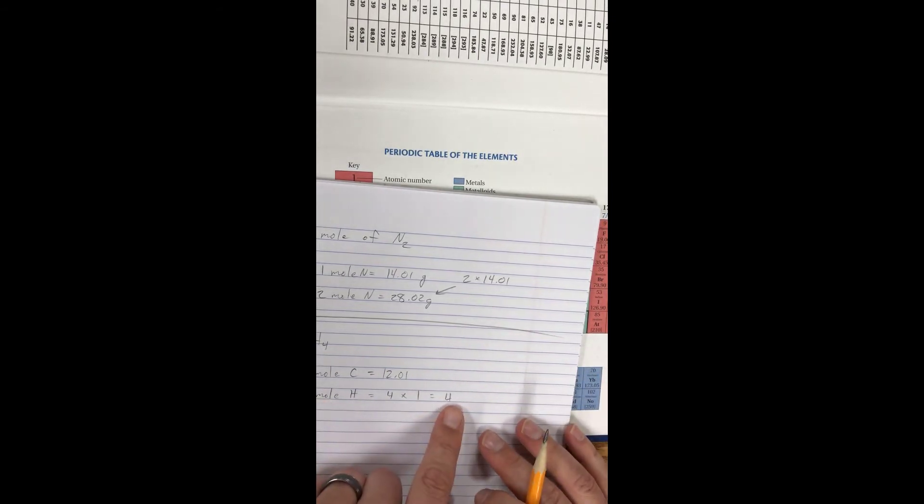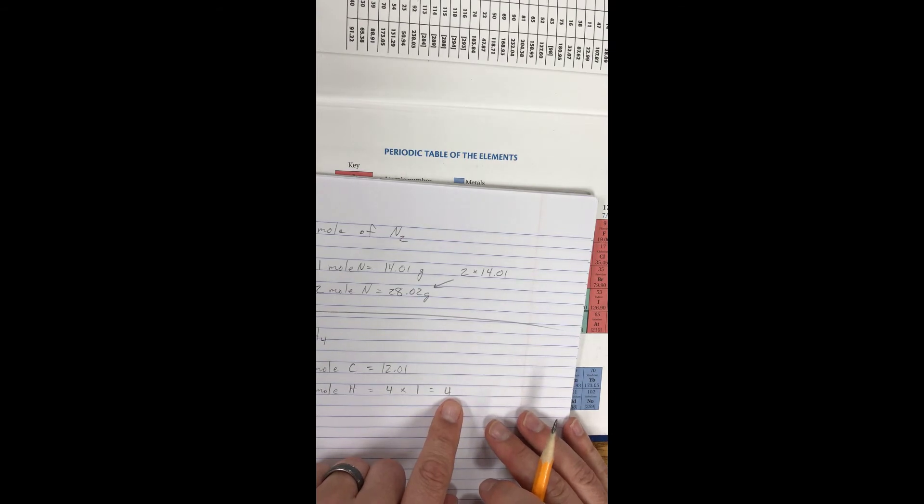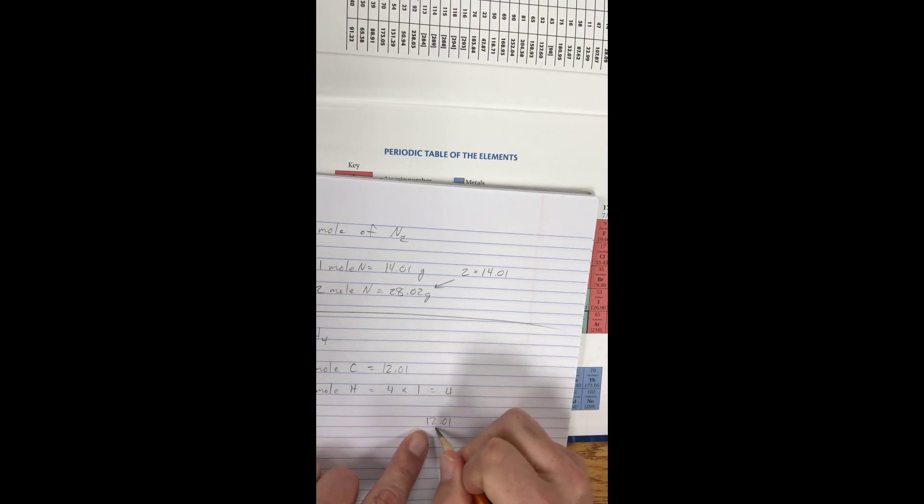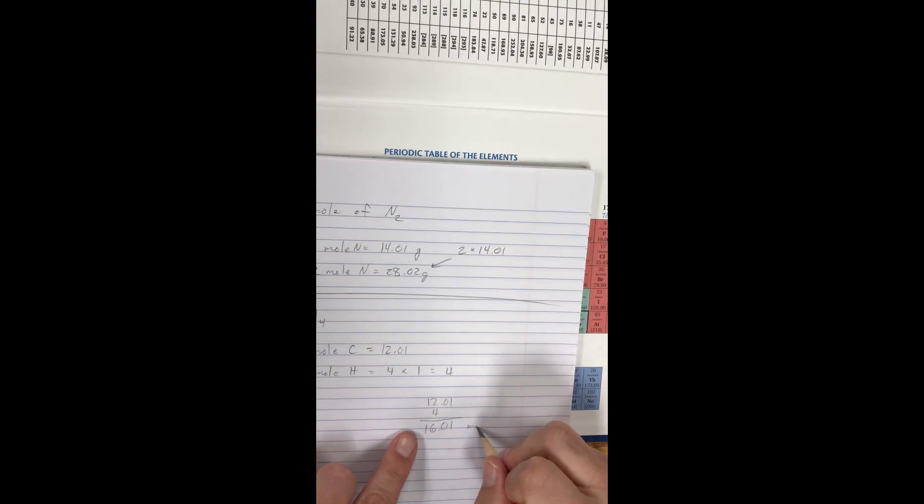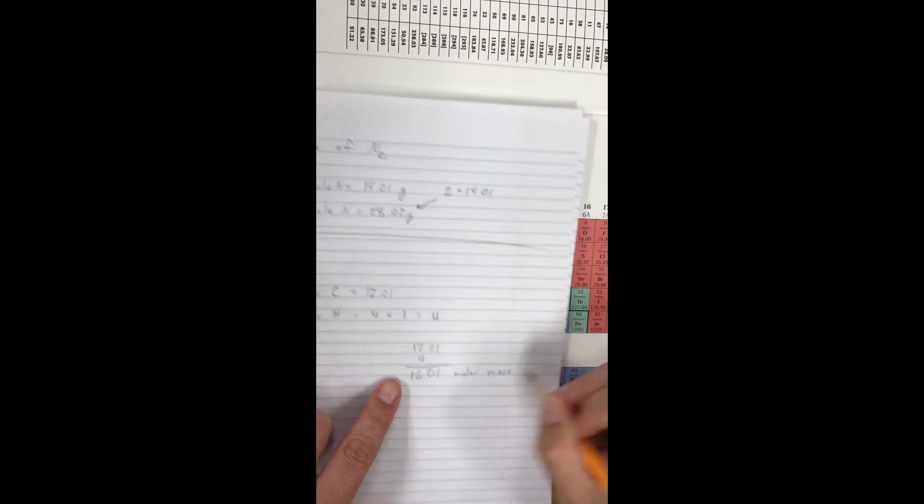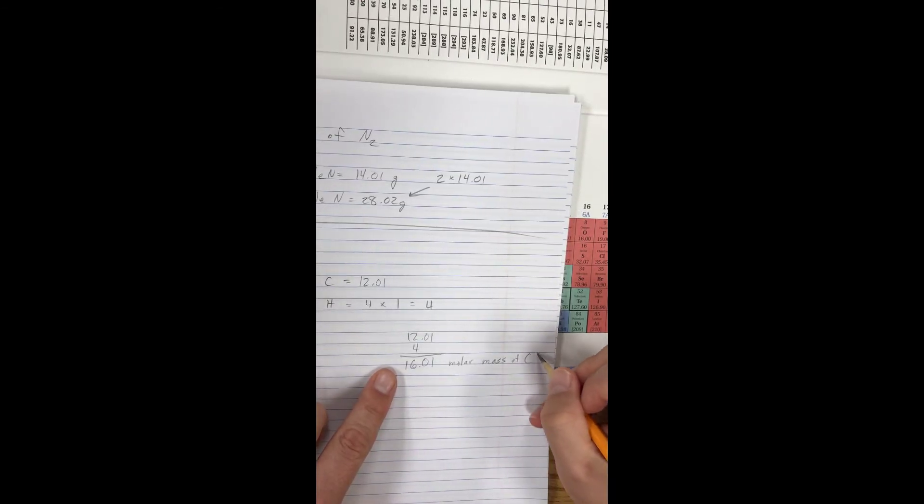So I add my four to my one mole of carbon, and I get 12.01 plus four is going to equal 16.01. That is my molar mass of CH4 or methane.